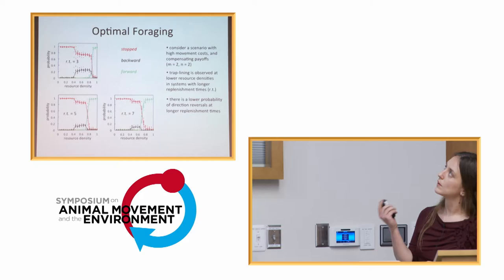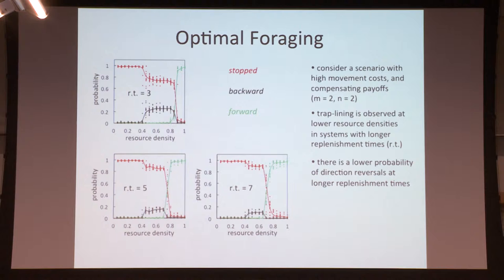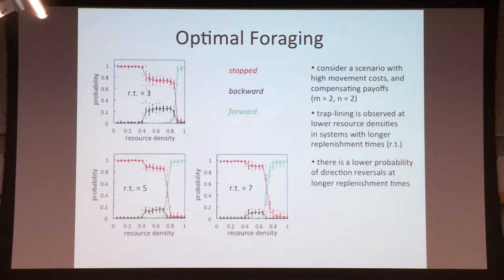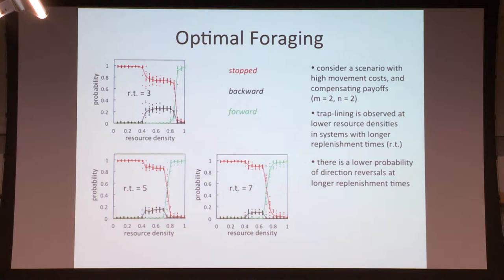Here are simulations from the very basic model where we've thrown resources randomly at our one-dimensional world. The red lines are always the probability that you stop and wait. The green lines are the probability that you move in the same direction you came from. The black lines are your probabilities of turning around. The top curve is for flowers that replenish in three time steps — each time step they get a third of their nectar back. The middle is a replenishment time of five time units, and the bottom is seven time units. As replenishment times get longer, you start to move forward rather than going back, because if it takes longer you're not getting as much back per time step.